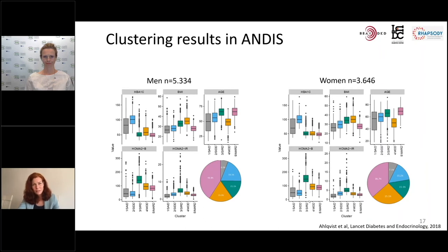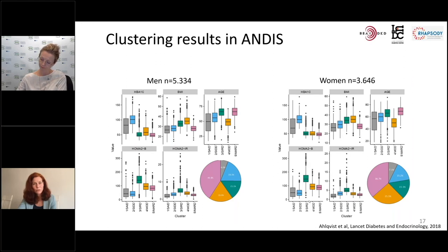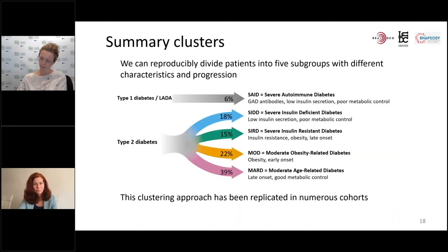In different cohorts and in men and women separately, the patients were divided into five groups. One group was the autoimmune patients, which includes type 1 and LADA, and then there were four groups of type 2 diabetes patients with different characteristics. This has since been replicated in numerous cohorts, confirming that we can reproducibly divide patients into these five groups.